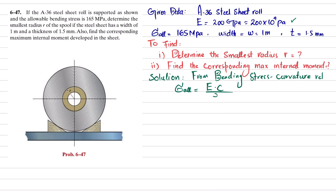The allowable bending stress is equal to E times c divided by the radius of curvature, where E is the modulus of elasticity, c is the maximum distance from the neutral axis to the top or bottom of the section, and ρ is the radius of curvature. We have σ_allowable, we have E, and c will be taken from the section.